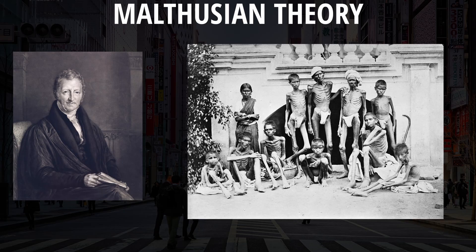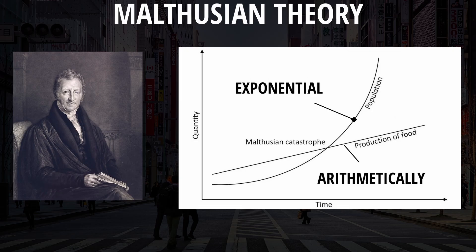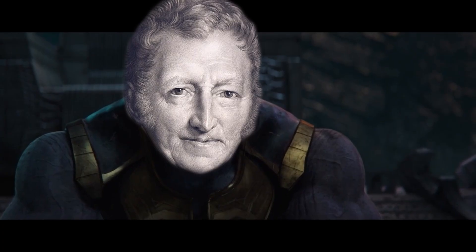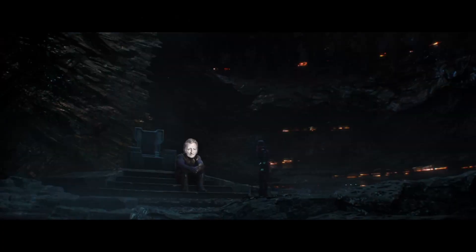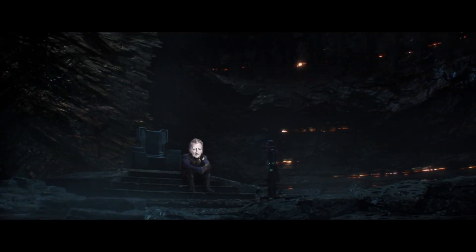In Malthus's mind, the population was exponential, growing at an alarming rate, while food was growing arithmetically, so eventually people would die. He's sort of like the real-life version of Thanos: 'This universe is finite, its resources are finite. If life is left unchecked, life will cease to exist.'